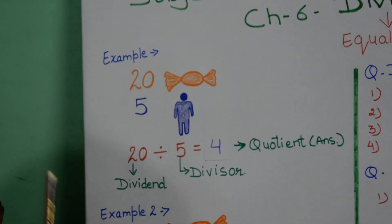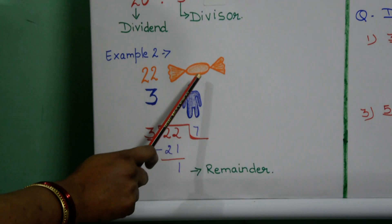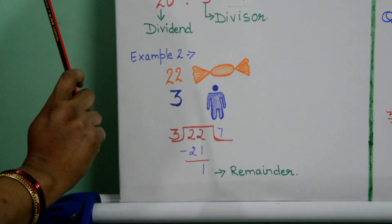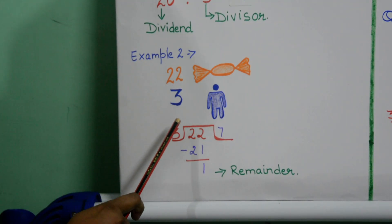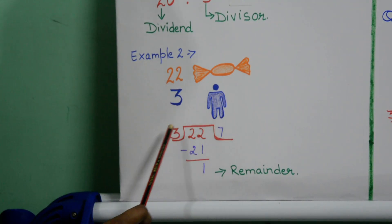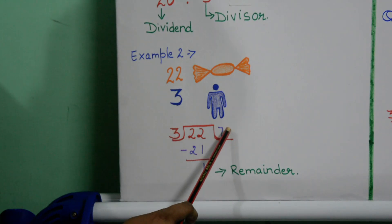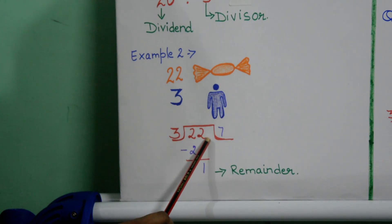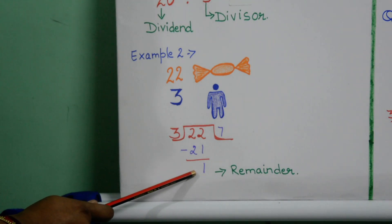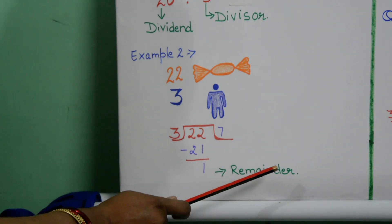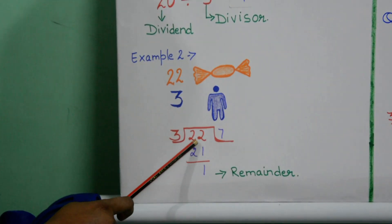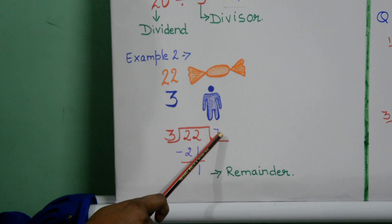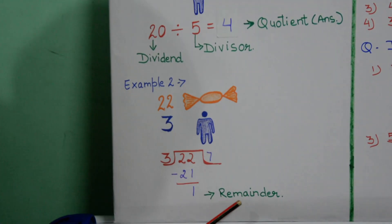Now another example. I gave you 22 toffees and you are 3 friends, so you have to divide these 22 toffees among 3 of you. Now you know that 3 sevens are 21. After dividing, 21 toffees are used and 1 is remaining — that is your remainder. In this question, 22 is your dividend, 3 is the divisor, 7 is your quotient, and 1 is your remainder.